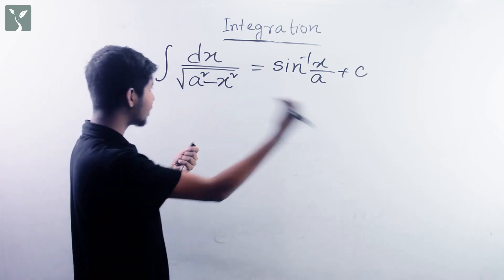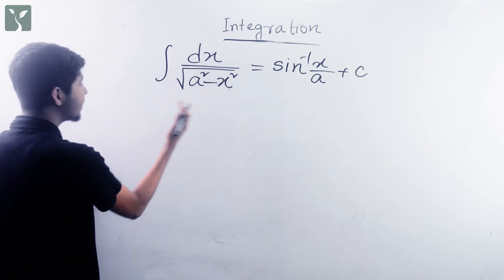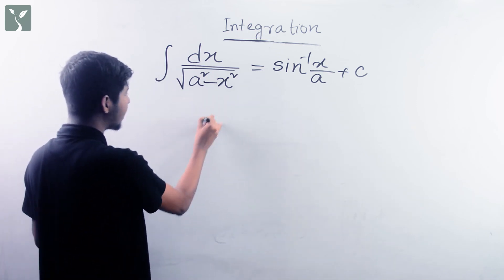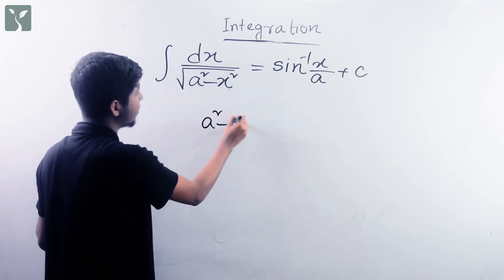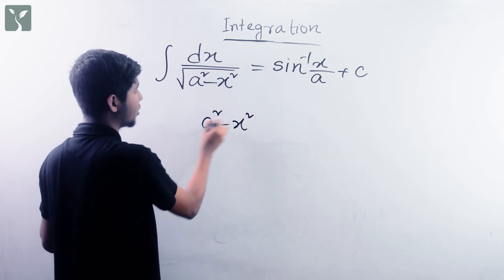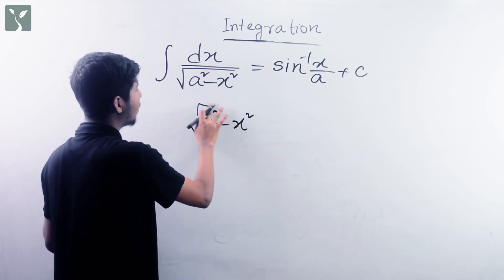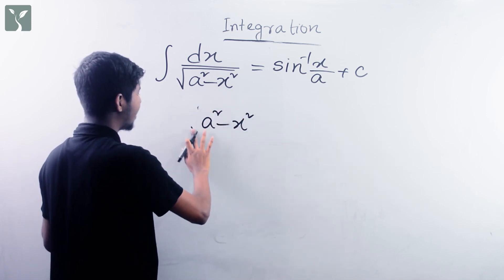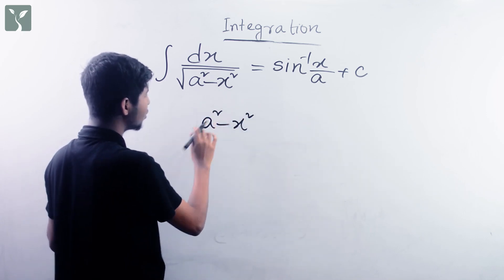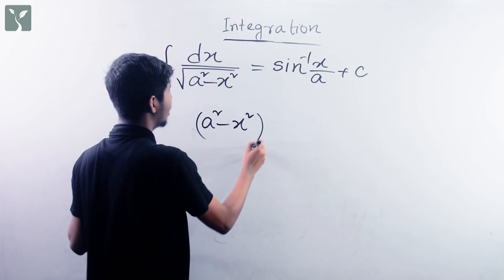Now, the quick tip of this is: when we have a square minus x square, root to the power 3 by 2, or 5 by 2, we will use a substitution.